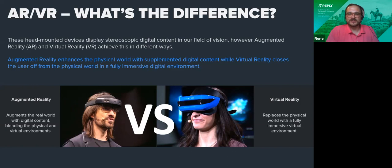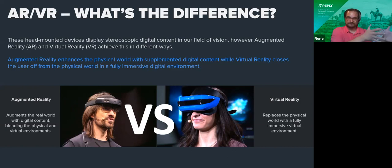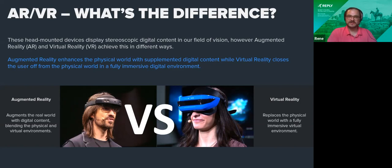Another terminology we see a lot these days is XR — extended reality — especially used by Qualcomm and Unity, but it's basically just another term for AR and VR. And then we have spatial computing, which I really like because we came from personal computing to mobile computing, and the next wave is spatial computing, which we will see really taking off in the 2020s.